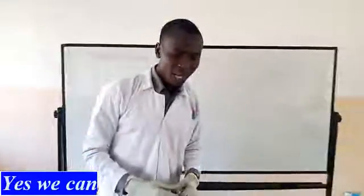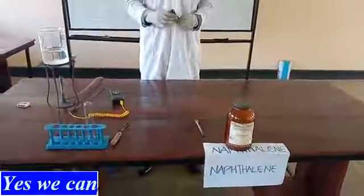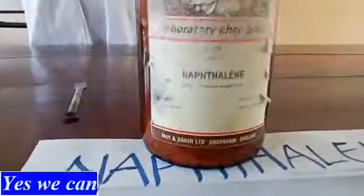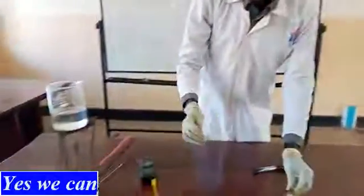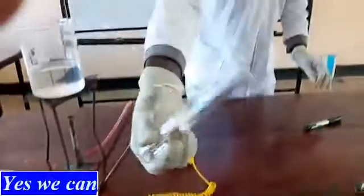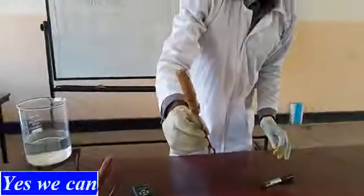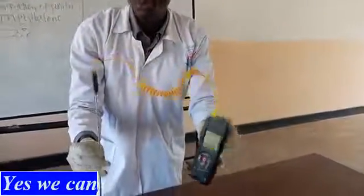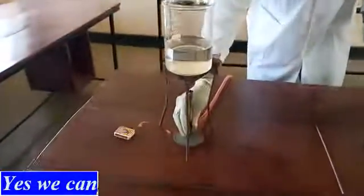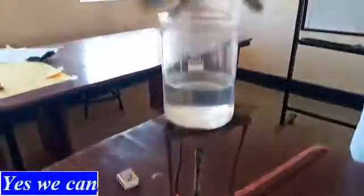We have here the apparatus we are going to use to determine the melting point of naphthalene. We have the naphthalene itself, which is a solid. We have a spatula, a test tube rack, a boiling tube, a test tube holder, a digital thermometer, a Bunsen burner with a wire gauze and tripod stand, and a beaker containing water.